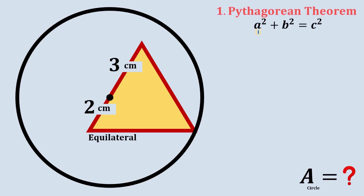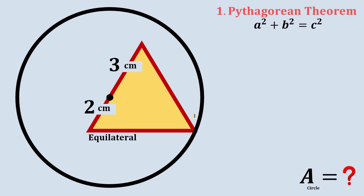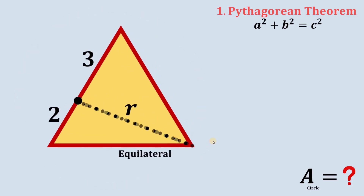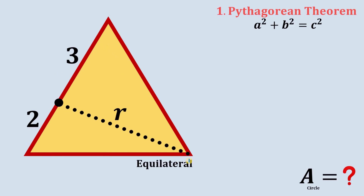The Pythagorean theorem is a² + b² = c², wherein a, b, and c are the side lengths of our right triangle and c is the hypotenuse. To get the area of the circle we need the radius. Let's connect the center to this intersection point and call this r. Now let's focus on this equilateral triangle. Since it's equilateral, all interior angles measure 60 degrees. Now let's drop a perpendicular line to this point.